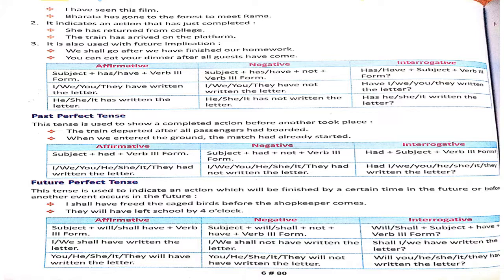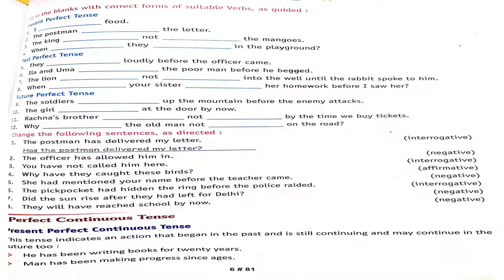For example: 'I dash food' in present perfect becomes 'I have taken the food' — I have already eaten. For past perfect, the fifth sentence uses 'had': 'I had talked loudly' — meaning I had already spoken before the officer arrived. For future perfect, the ninth sentence: 'The soldiers will have climbed the mountain' — meaning before the enemy attacks, the soldiers will have already climbed the mountain.